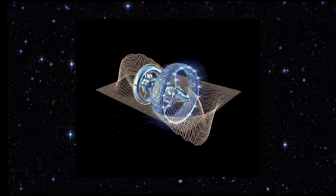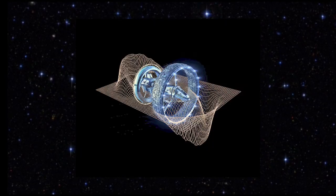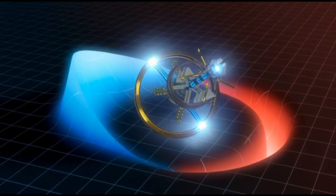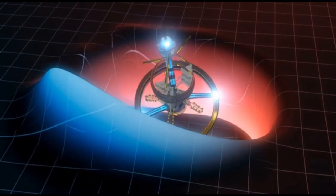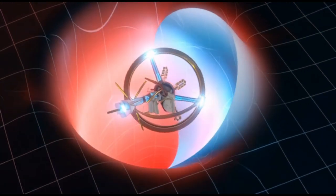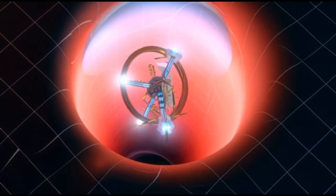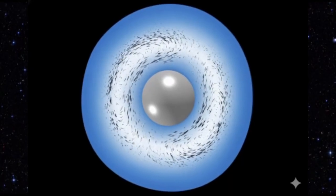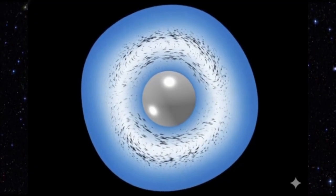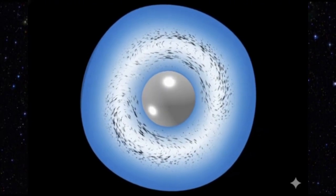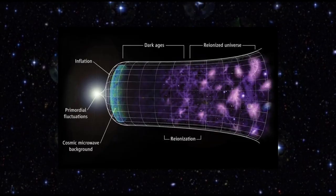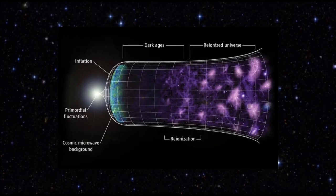Engineering challenges: even if the physics checks out, the engineering is staggering. Generating and shaping that energy, maintaining bubble stability, and ensuring safety for anything inside. No time paradoxes: because the ship never travels locally faster than light, causality remains intact, unlike wormholes or other faster-than-light ideas that risk time-travel paradoxes. Detection possibilities: warp bubbles might emit detectable signatures, gravitational or electromagnetic ripples, providing a new avenue for technosignature searches. If another civilization mastered this, we might find evidence long before we could replicate it.